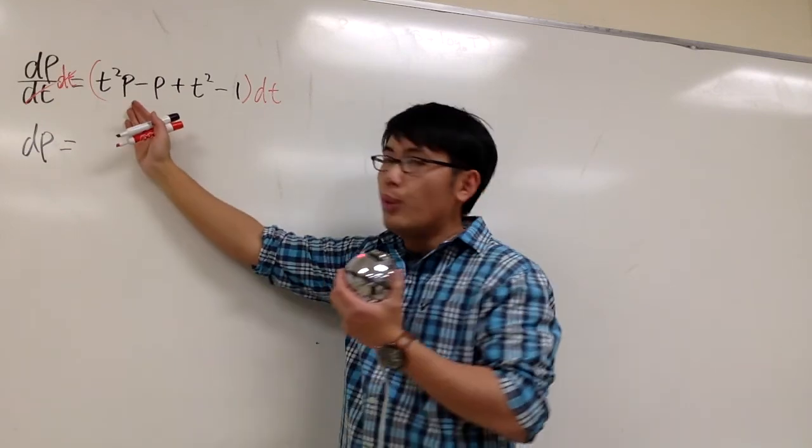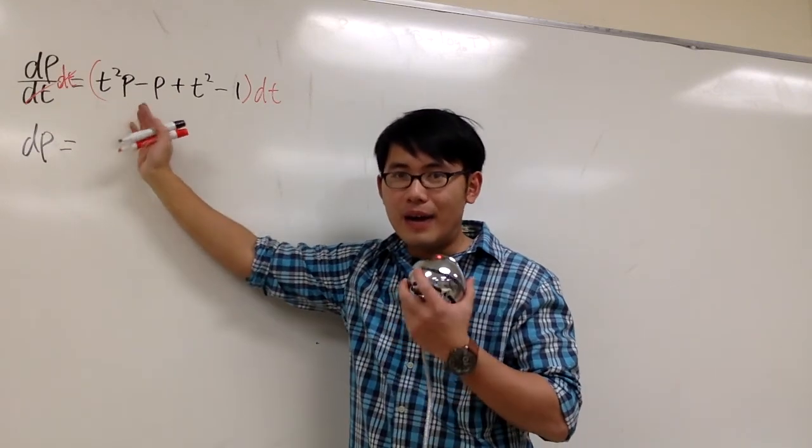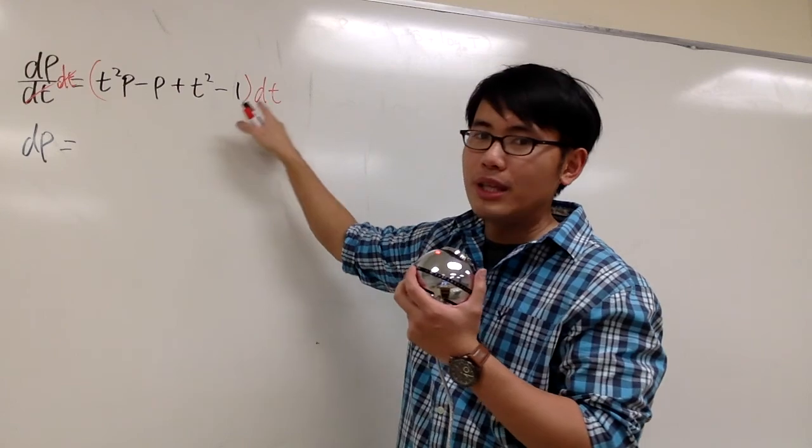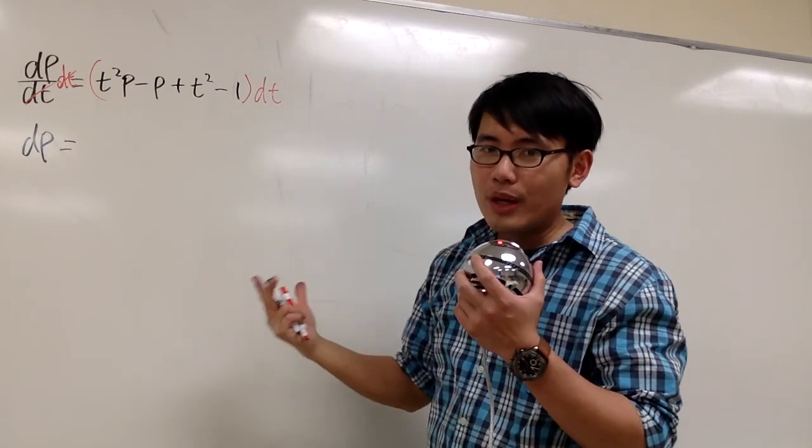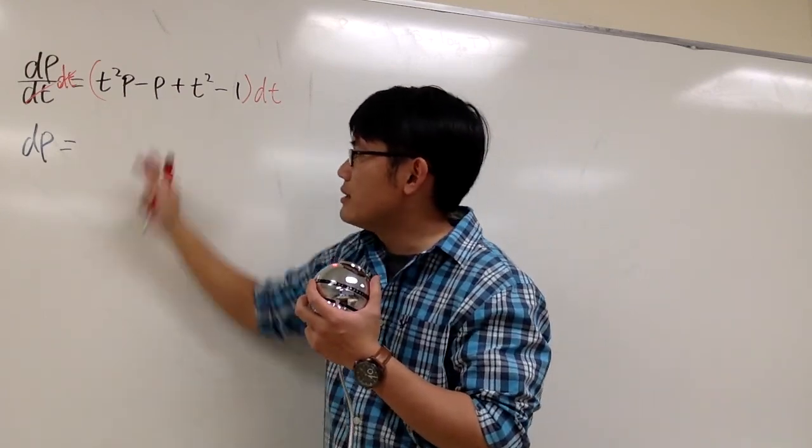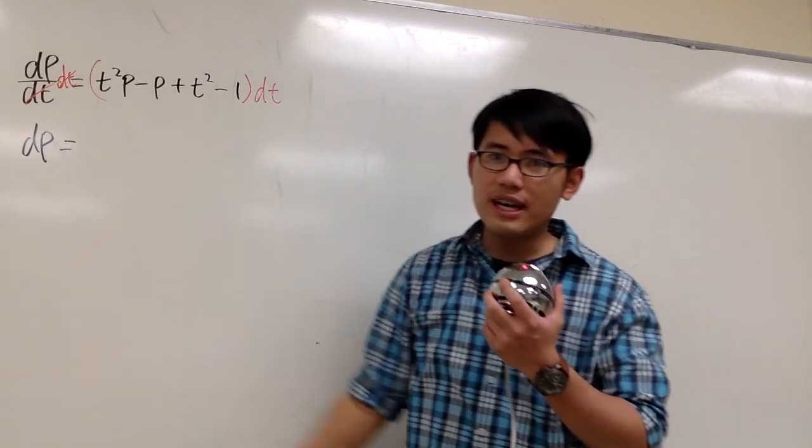but then on the right-hand side, we have the p right here as well. However, that's inside of these parentheses, and that's being multiplied with dt. How can we get these two p's possibly onto the left-hand side, along with the dp?